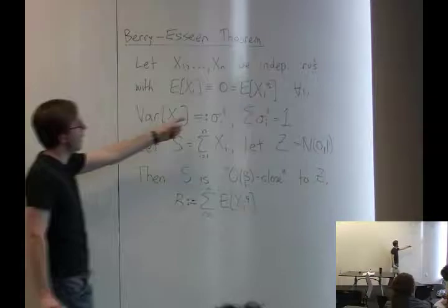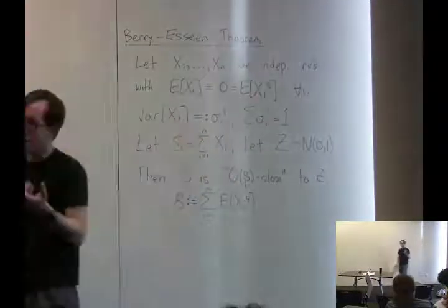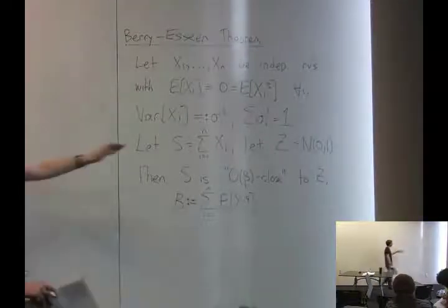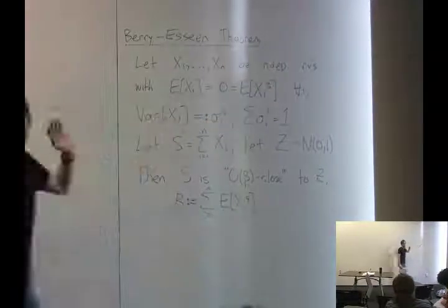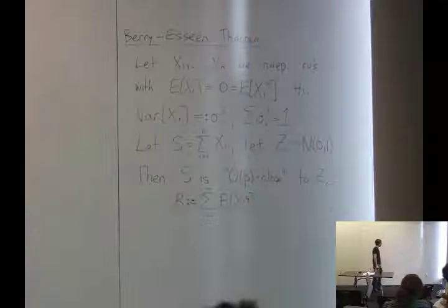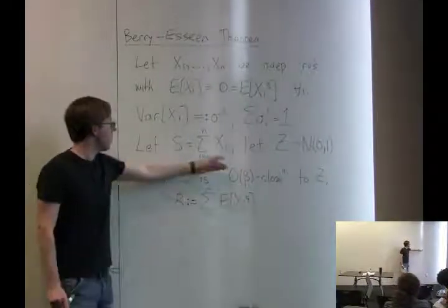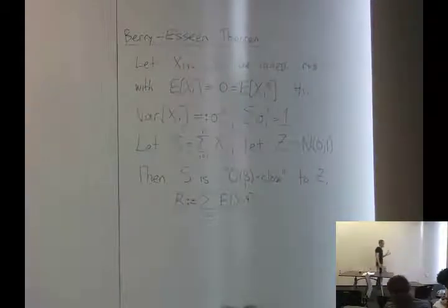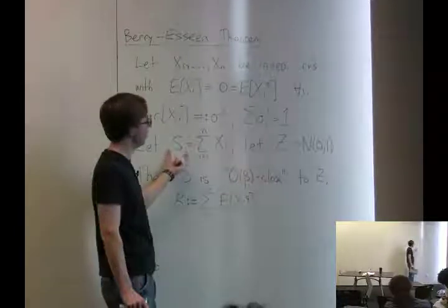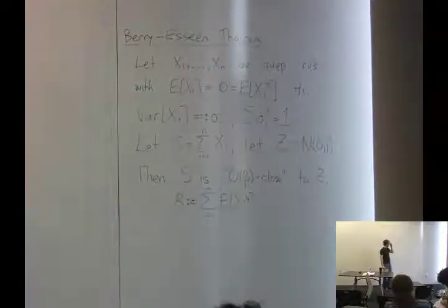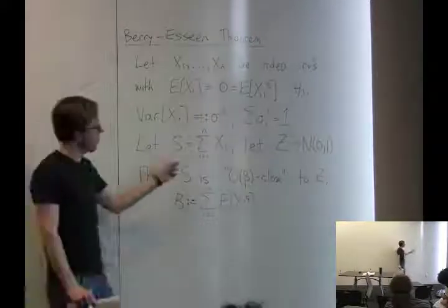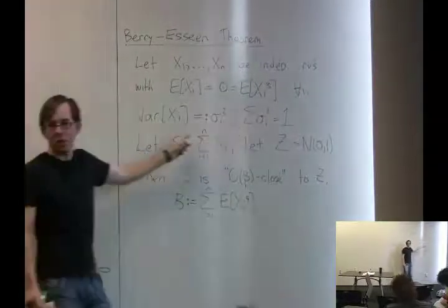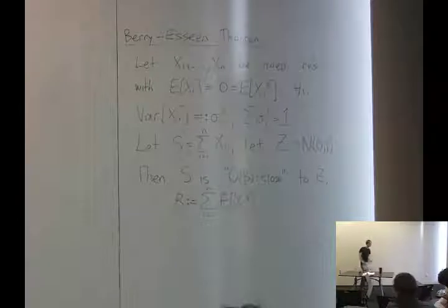For today, I'm adding the extra condition that they all have third moment equal to 0. That's satisfied if they're symmetric random variables, like xi has the same distribution as minus xi. This is not really important and we could just drop it, but I'll keep it for notational simplicity. This theorem is about what happens if you add up all these random variables to get a new random variable S. The central limit theorem suggests that S has a distribution close to a normal distribution — specifically the normal with the same mean and variance as S, which is mean 0 and variance 1.